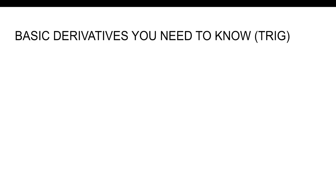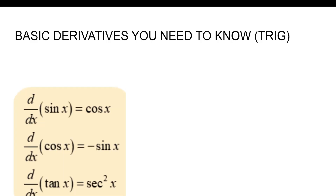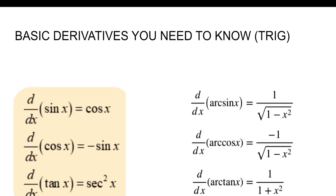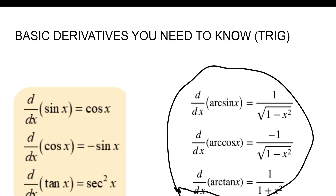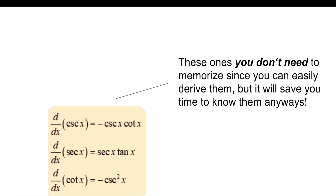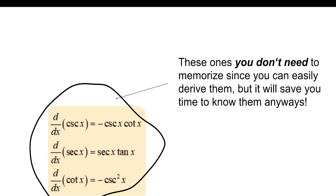Then you need to know your basic trig derivatives: the derivative of sine, the derivative of cosine, and the derivative of tangent. If you have not learned these already, pause this video and take a second to learn them. The same thing for arc sine of x, arc cosine of x, and arc tangent of x. These tend to appear in a free response or multiple choice, where it gives you an integral and you have to recognize that it's arc sine of x plus c. You don't necessarily need to memorize all of these since you can derive them, but it will save you time.